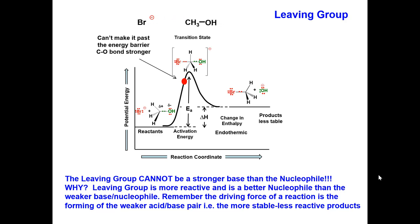So the reaction would go backwards to produce the less basic, more stable bromide ion. This reaction would not proceed to products.